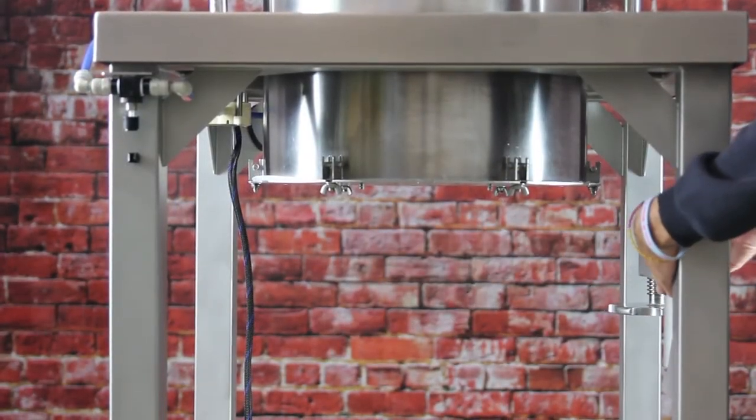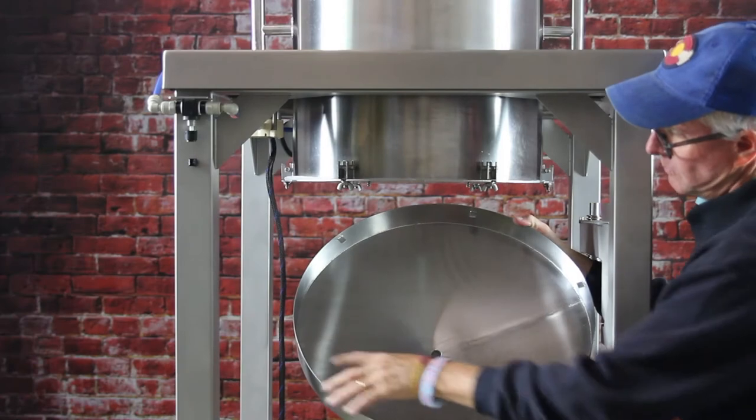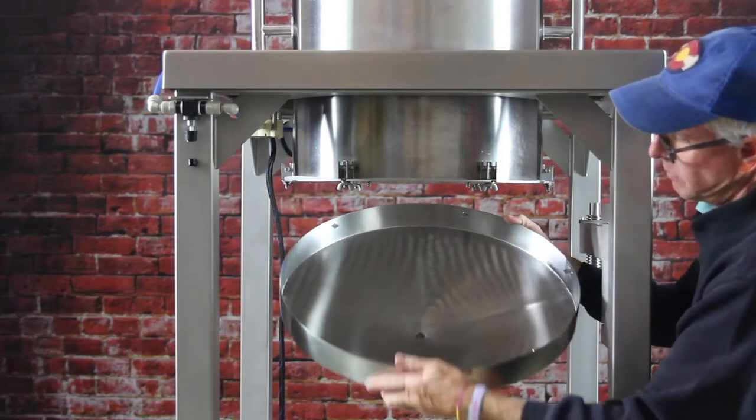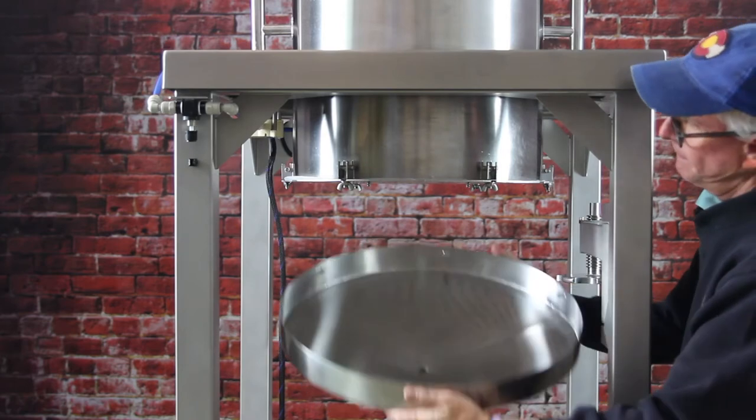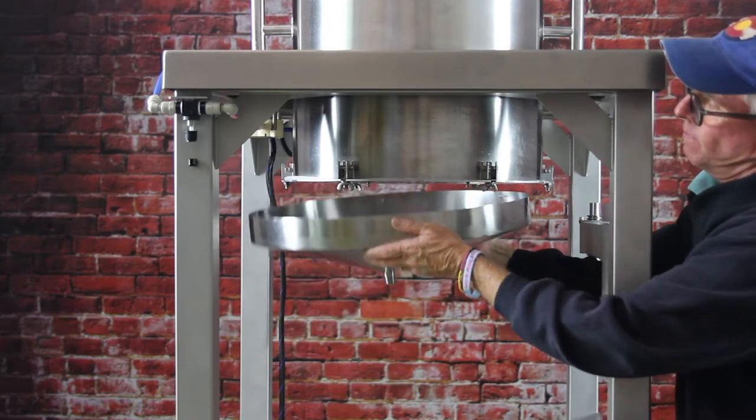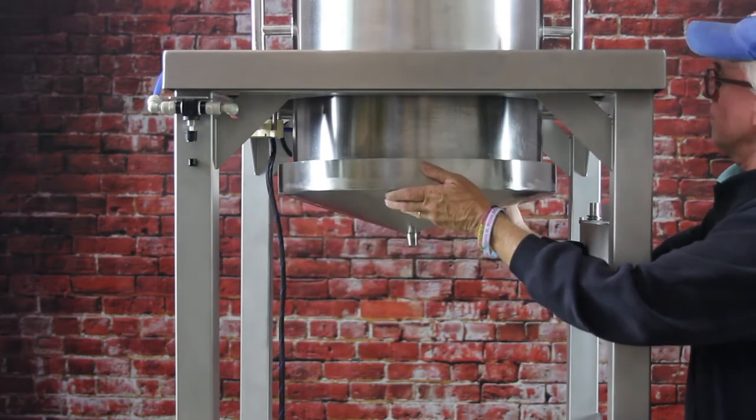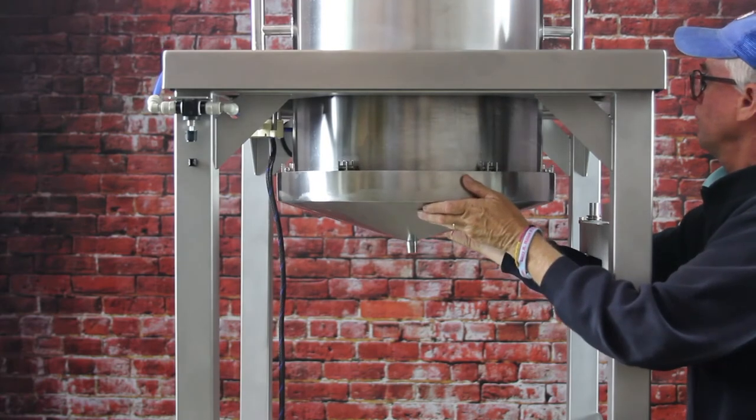Next we'll mount the collection funnel. The collection funnel has six tabs. Those six tabs push up through grooves in the perforated plate. Then just rotate the collection funnel slightly one direction or the other, and the tabs will sit on top of the perforated plate.